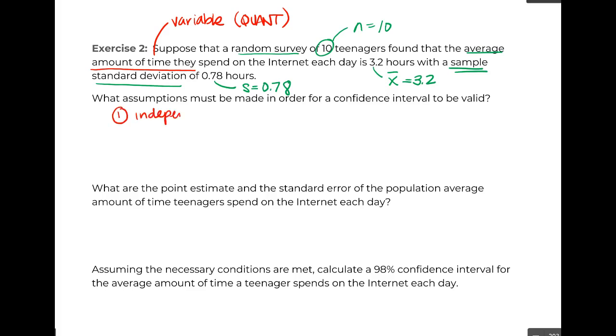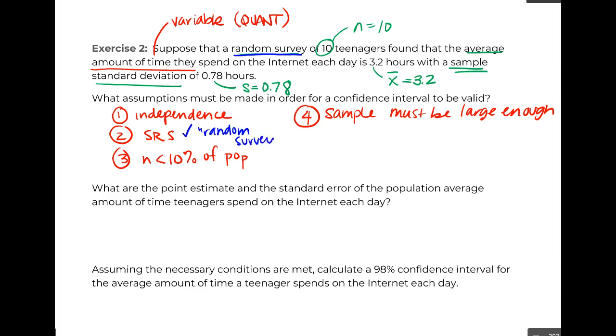One, independence. Two, we need a simple random sample. Three, we need N to be less than 10% of the population. And four, we have all those crazy rules, but our sample has to be large enough. So let's check through these. First off, independence. Well, we have a random survey. We have our SRS, and with an SRS, we buy ourselves independence. Because there's no reason one randomly surveyed teenager would influence the next randomly surveyed teenager.